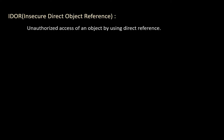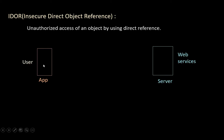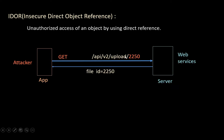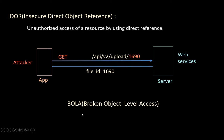IDOR — Insecure Direct Object Reference — is where an attacker gets unauthorized access to an object by using a direct reference. So let's say a user uploads a file. An API call will be made to the upload endpoint with a POST request, and a reference ID will be used. If the attacker changes the POST request to GET and changes this reference ID, he can get the file with that same ID. By changing the reference ID he can access other users' files — this is a broken access control, also called Broken Object Level Access Control. IDOR and BOLA are the same thing.